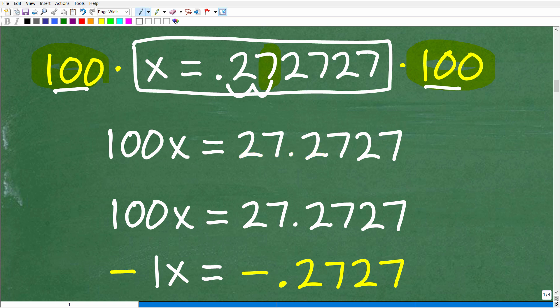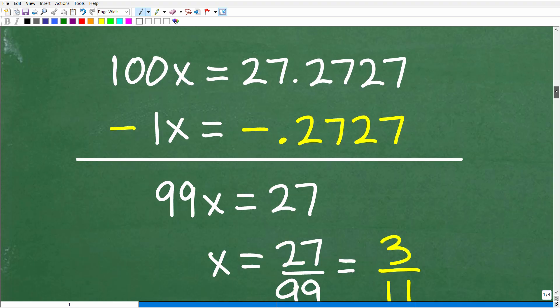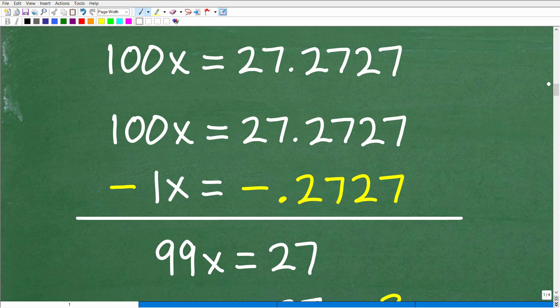If you're with me so far, let's continue on. So because our repeating decimal ended on the hundredths place, we multiply both sides of that original equation by 100, and we end up with this. What we're going to do now is we're going to take that original equation, x equals 0.2727 repeating, and we're going to subtract that away from 100x equals 27.2727.